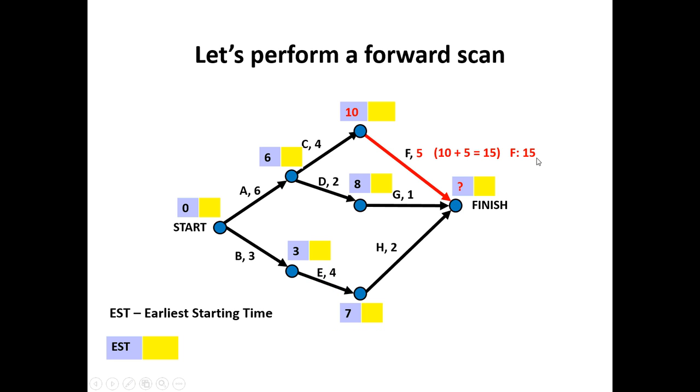Ten plus five gives me fifteen. However you notice I've got one, two, three possible activities leading to my finish point. So if I follow activity F, it will take fifteen minutes to complete the earliest possible time. Following G, it's an eight plus one gives me nine. H is a seven plus two gives me nine as well. So here, in my last particular collection of boxes, I have three options. A fifteen, a nine, or a nine.